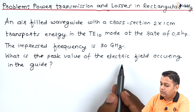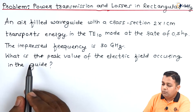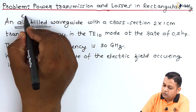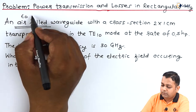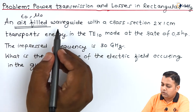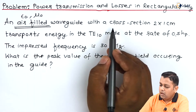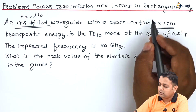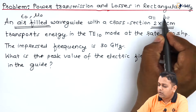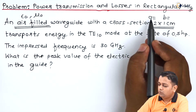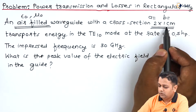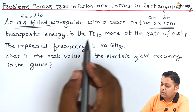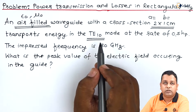The impressed frequency is 30 gigahertz. What is the peak value of the electric field occurring inside the guide? Reading the problem: this rectangular waveguide is filled with air, so we use permittivity epsilon-zero and permeability mu-zero. The cross-sectional dimensions are 2 by 1 centimeter — small a equals 2 centimeters is the broader dimension (breadth), and small b equals 1 centimeter is the smaller dimension (width). This waveguide transports energy in the dominant mode TE10.